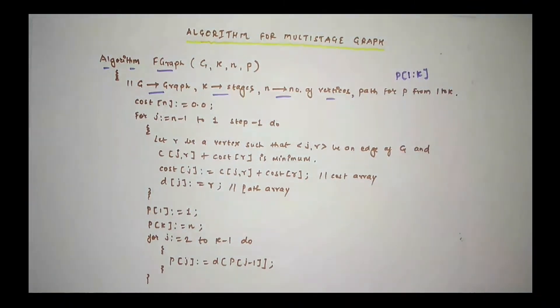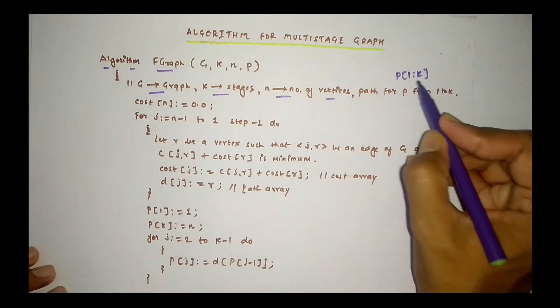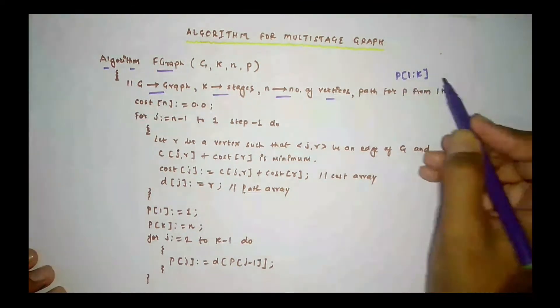So whatever stages you have divided, in those stages we will represent the path respectively from 1 to K.